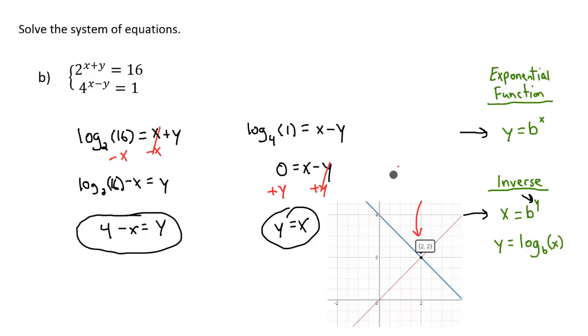So there we go. 2, 2. That means that x equals 2, and when x equals 2, our y is going to equal 2 as well.